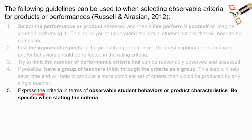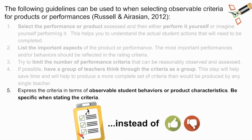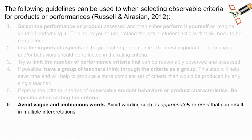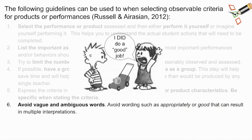The next step is to express the criteria both on a rubric and to students in terms of observable behavior or product characteristics. We need to be very specific when stating the criteria, with clear categories as well as descriptions of performance. Instead of being non-specific and just saying great job or terrible job, we should avoid vague and ambiguous words. Words such as 'appropriately' or 'good' can result in multiple interpretations between teacher and student—vague language can mean one thing to one person and something different to another.